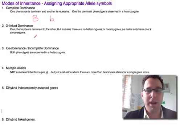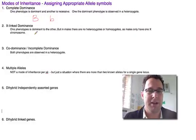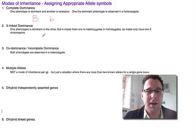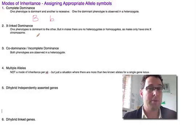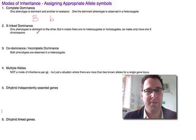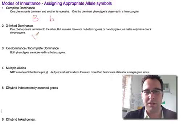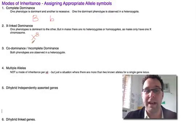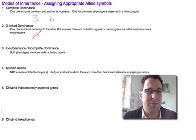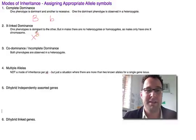For an X-linked trait, we do essentially the same thing — big B for the dominant allele, little b for the recessive allele. The difference is that because males have only one X chromosome, we need to indicate whether the person has two X chromosomes or only one. We do that by writing the allele symbol as a superscript to an X. The X is not the allele symbol; the allele symbol is the B. We write it as a superscript to X just to remind ourselves that the locus is on the X chromosome.